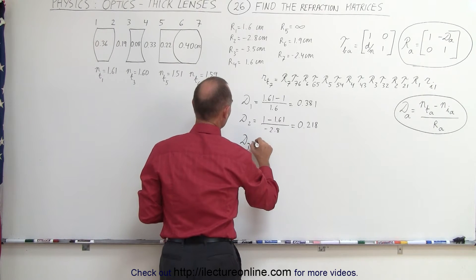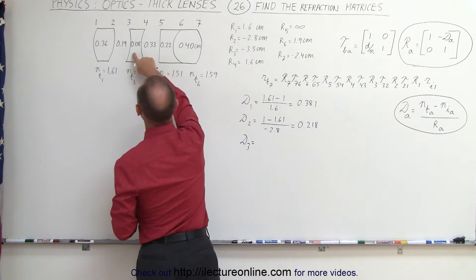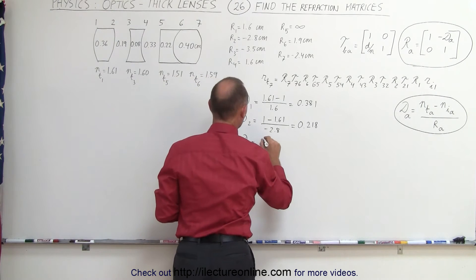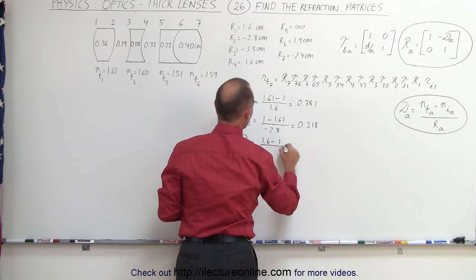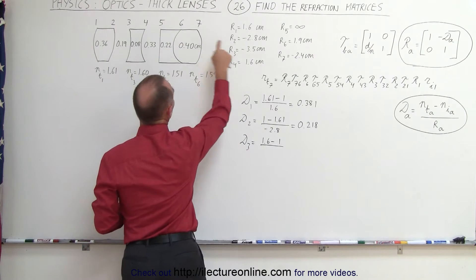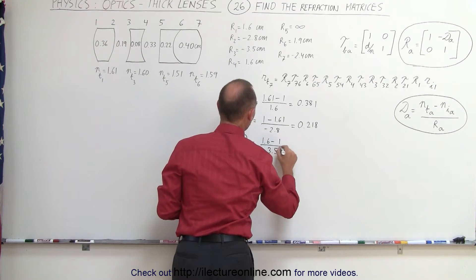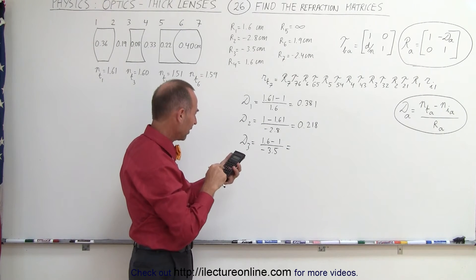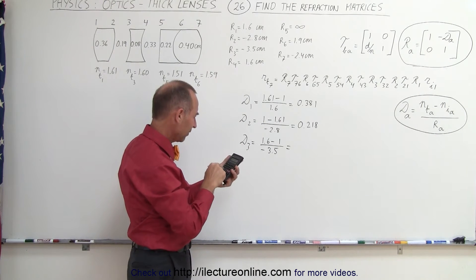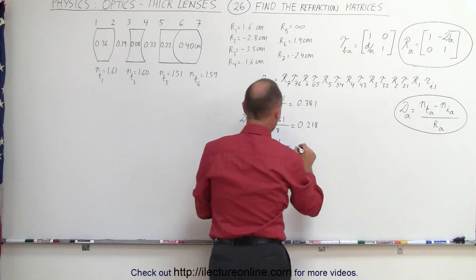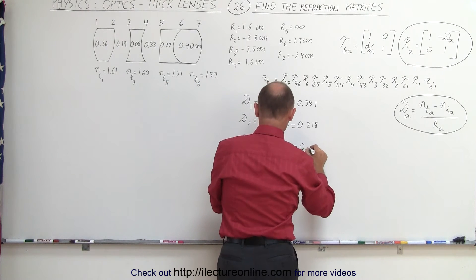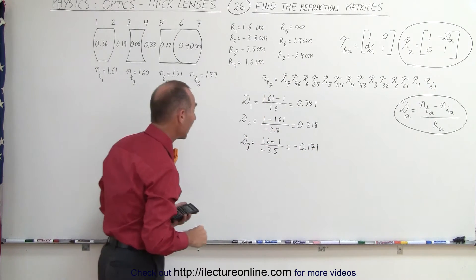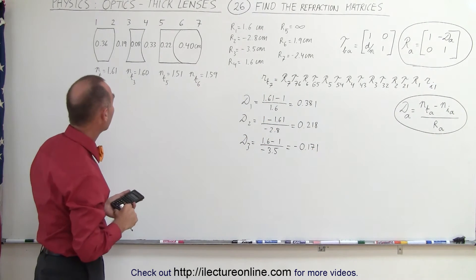d3, so that's across this boundary, that would be the index of refraction here, 1.6, minus 1 divided by the radius of curvature r3, minus 3.5. So we get 0.6 divided by 3.5, that's a negative, so we have minus 0.171. It's minus here, so we have a negative power for that boundary.